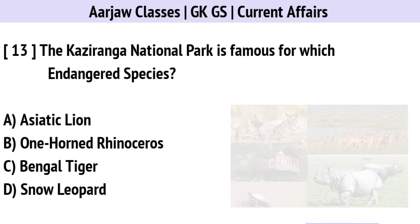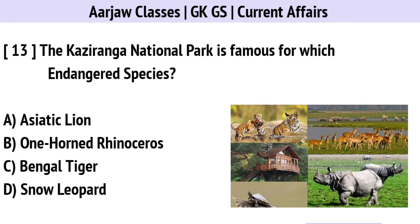The Kaziranga National Park is famous for which endangered species? Correct option is B — One-Horned Rhinoceros.